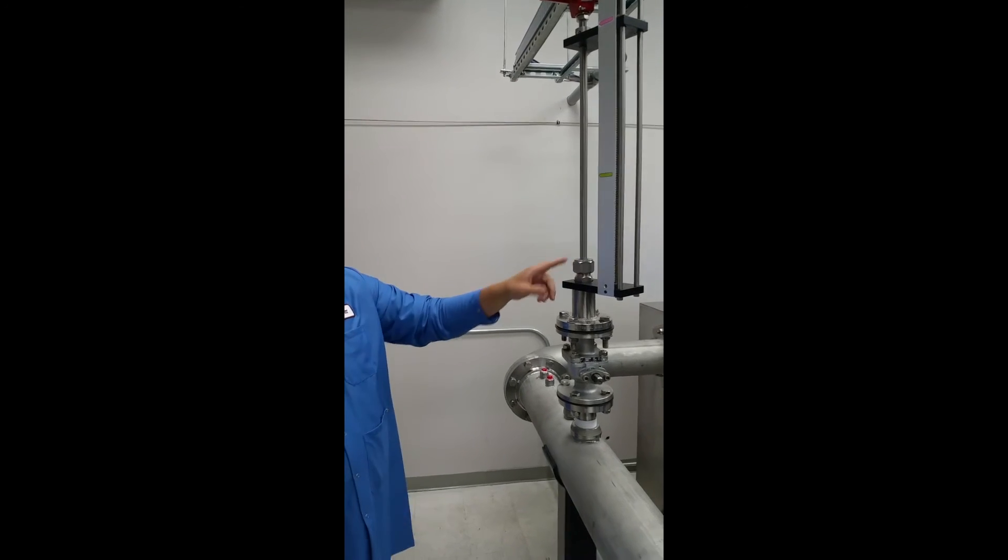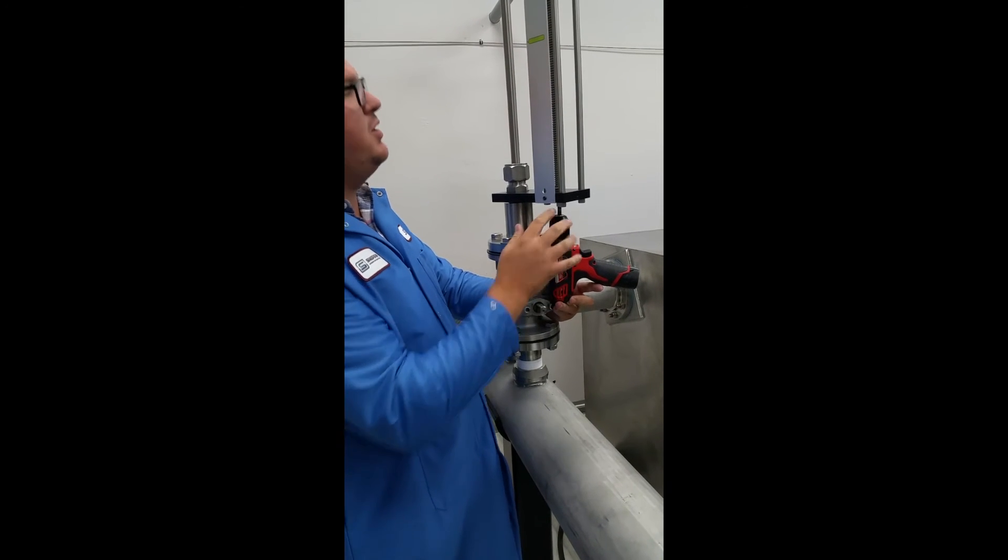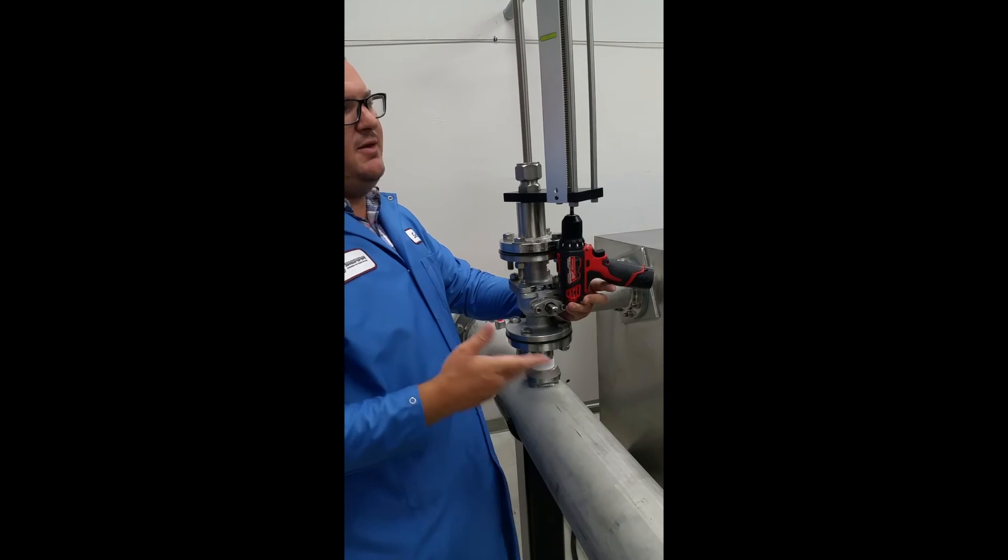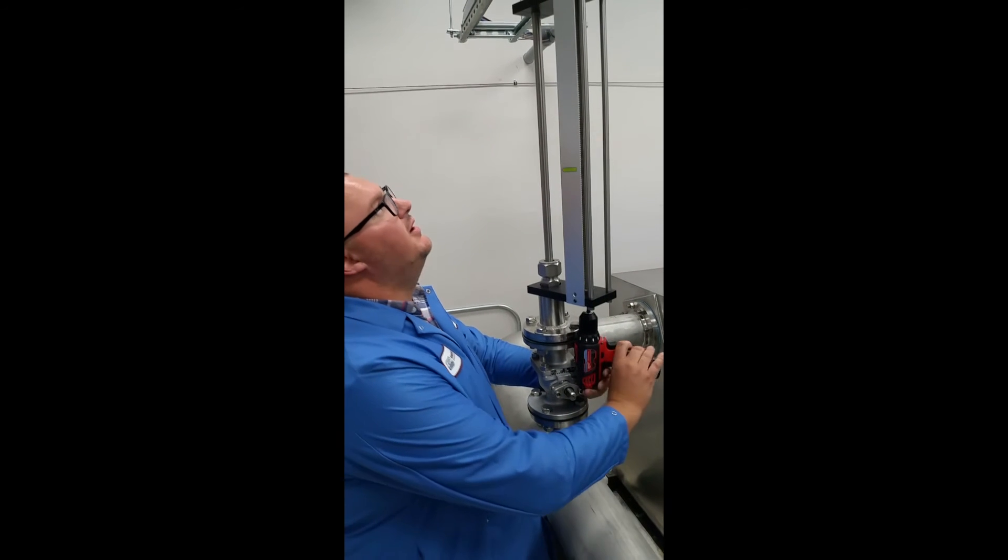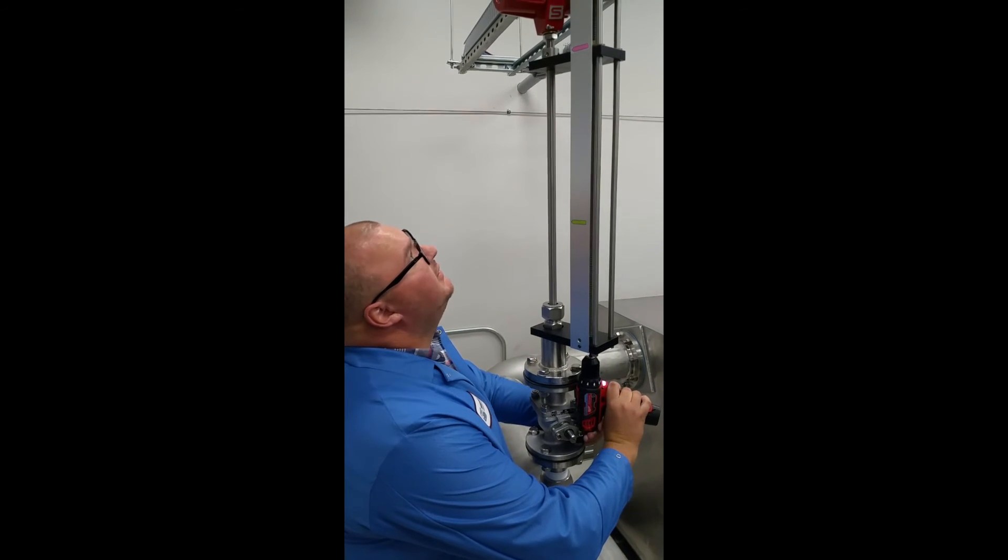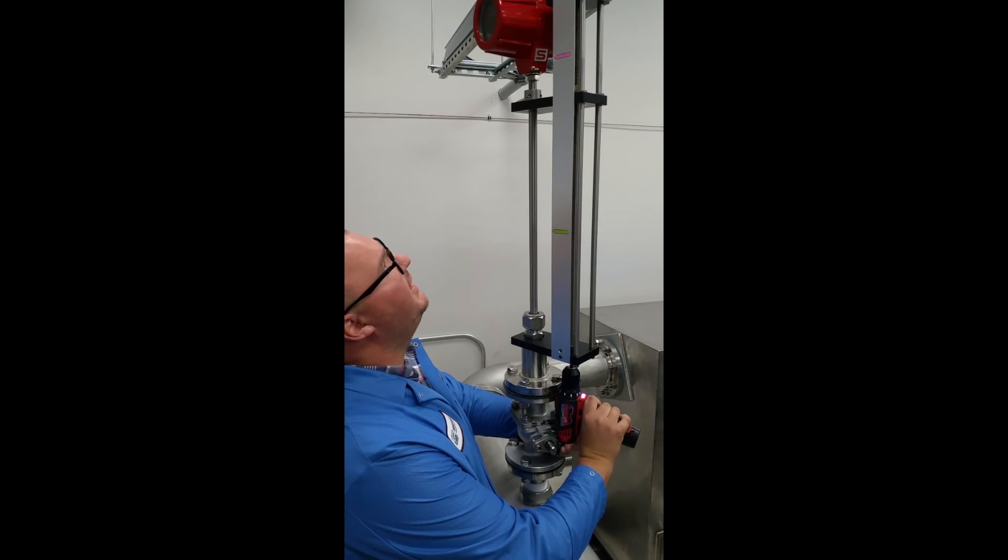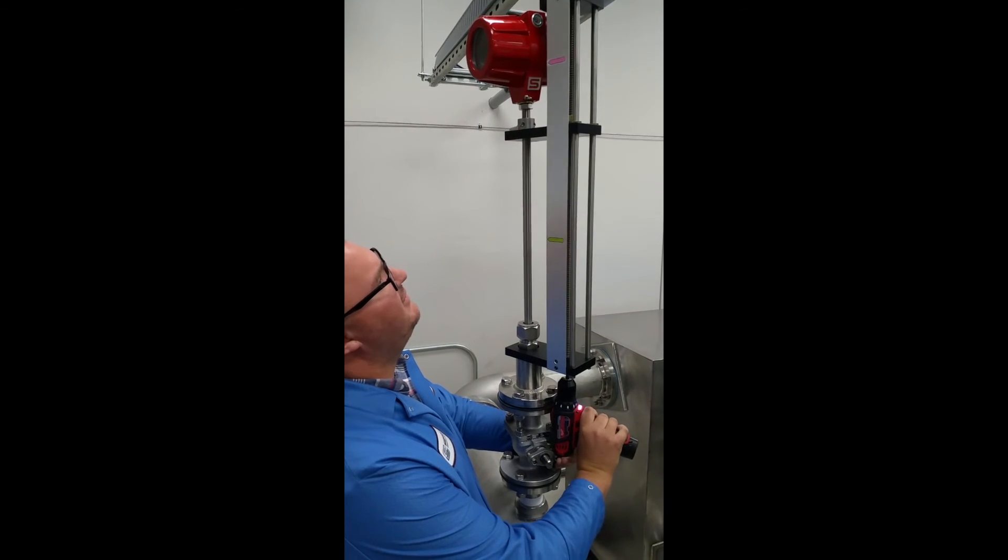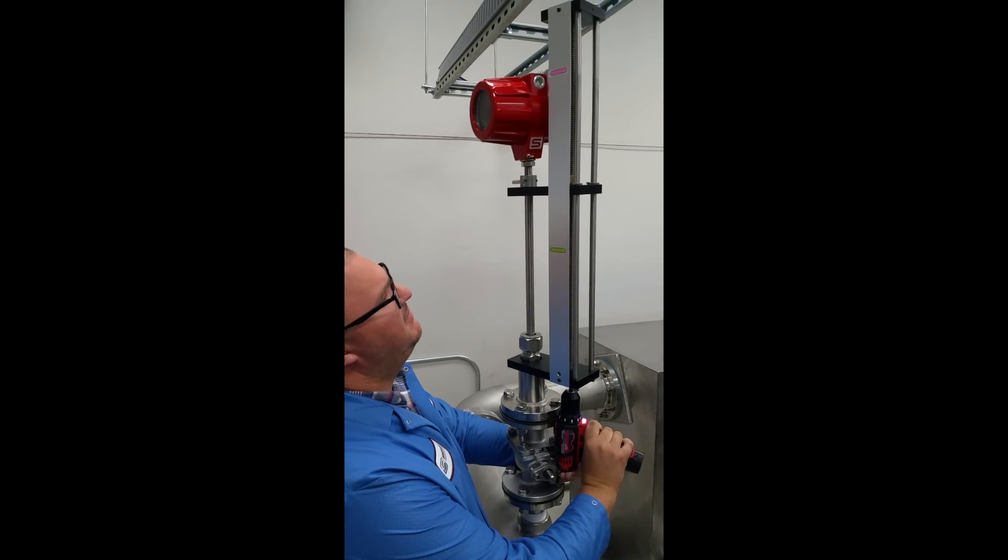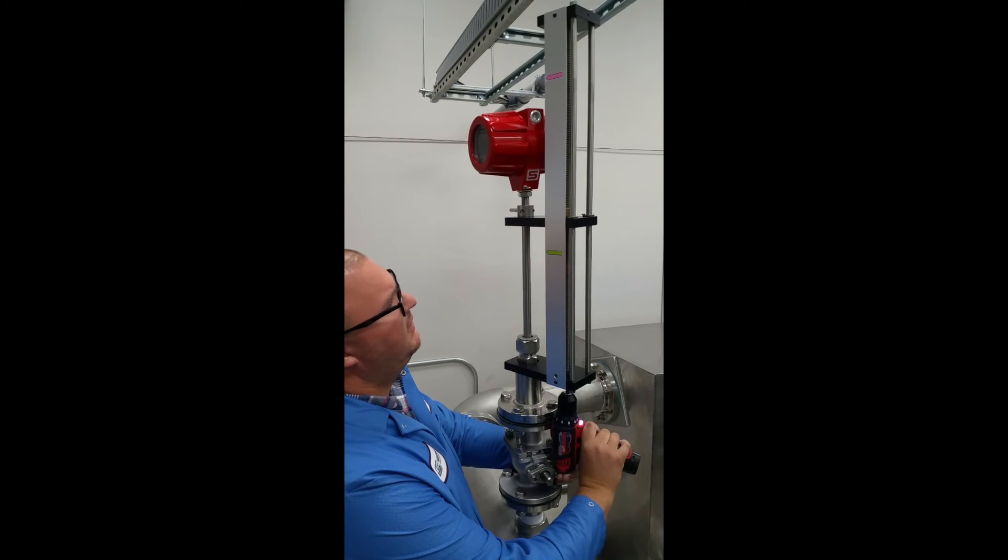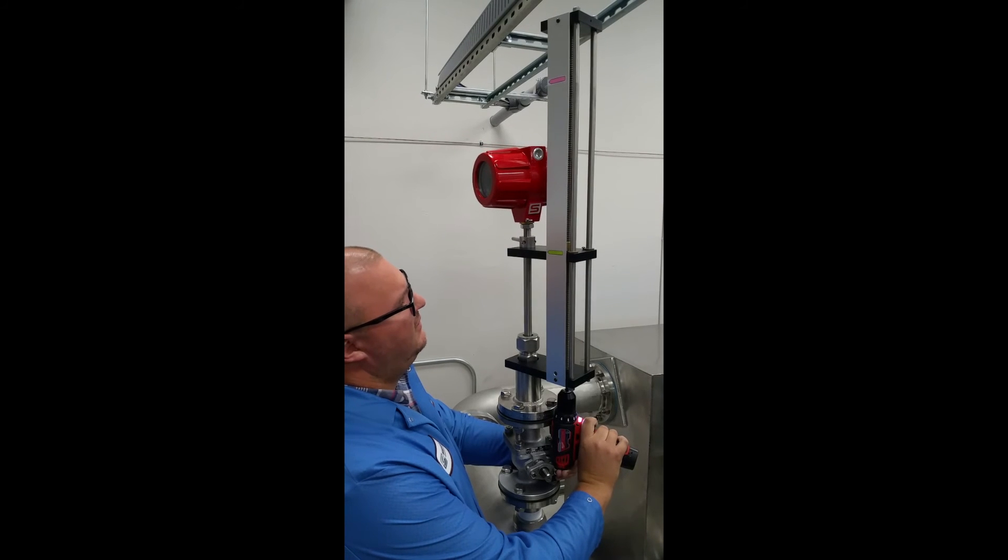Now I'm ready to actuate our retractor. I've got my power drill here. Quarter-inch ratchet adapter. Depending on the pressure of your system, you might have to use a different tool or a more heavy-duty tool to actuate it. And I'm just going to slowly lower it. I'm going to be watching the top bracket. And when it gets to my green mark there, I'm ready to stop. And my probe, I'm getting my probe in the middle of the pipe. There we go.